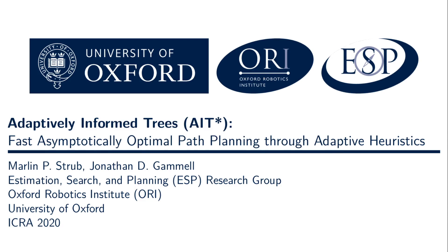Hello everyone! My name is Marlin Strupp and I'm part of John Gammel's Estimation Search and Planning Group in the Oxford Robotics Institute at the University of Oxford. This video presents our ICRA paper on Adaptively Informed Trees, or AIT* for short. AIT* is an algorithm that uses adaptive heuristics for fast asymptotically optimal path planning.